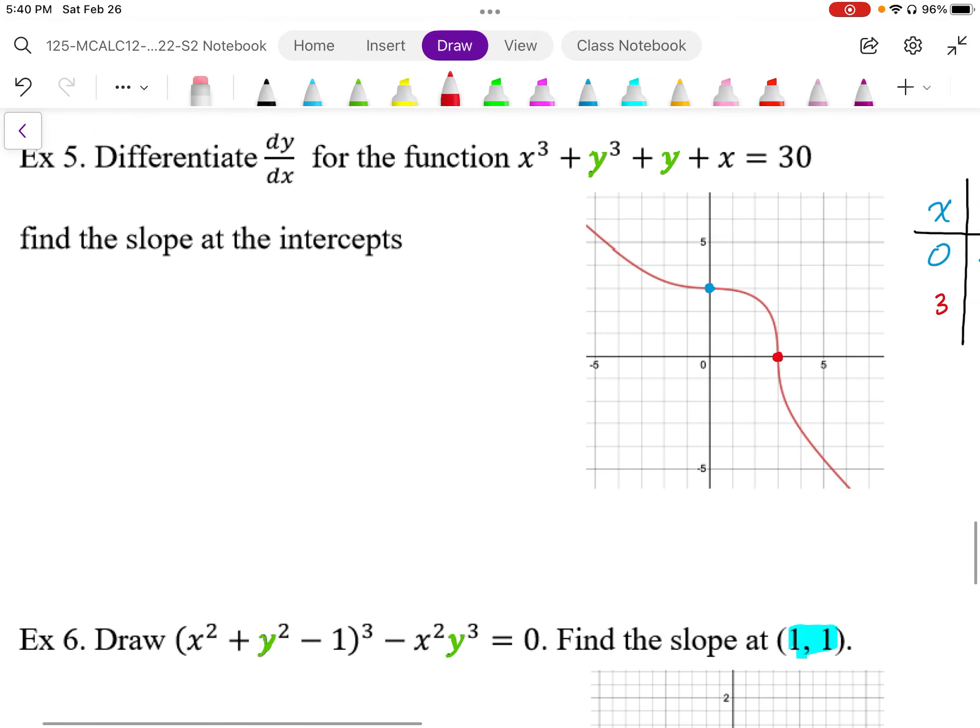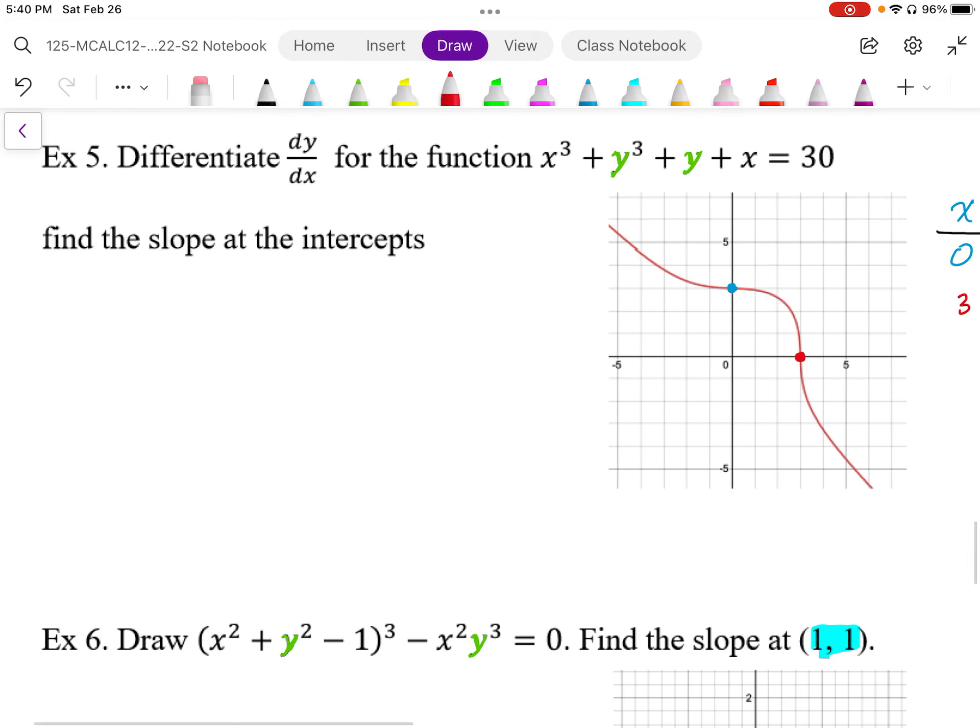From here, we want to find the slope. Because this is an implicit function, we're going to differentiate this implicitly. And what that means is we're going to differentiate the x normally. And as we differentiate y, we're going to differentiate the outside of y.